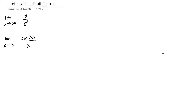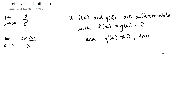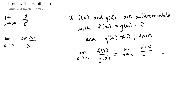So this thing called L'Hôpital's Rule says that if we have two functions, f of x and g of x, and they're differentiable, with f of a equaling g of a equaling 0 — so both of these functions equal 0 at the point a — and g prime of a does not equal 0, then we can rewrite our limit. So we can look at the limit as x goes to a of f of x over g of x, and this is going to be the same thing as the limit as x goes to a of f prime of x over g prime of x.